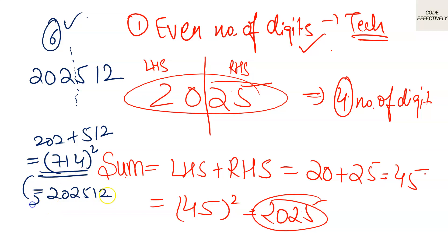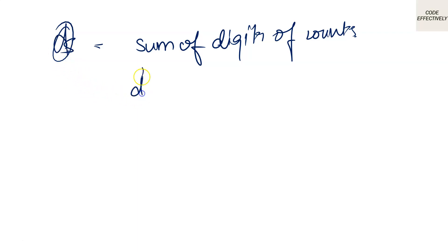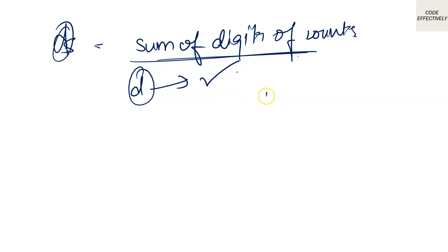If the result comes out to be the same number, then it is a tech number. So here is the method: first, we count the number of digits. We check whether that count is even. Then we divide the digit count by 2 — for example, 4 divided by 2 gives us 2.